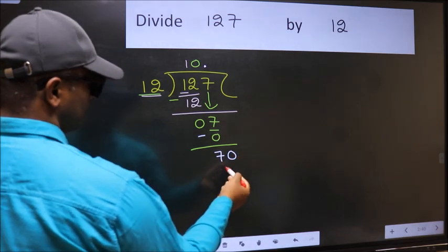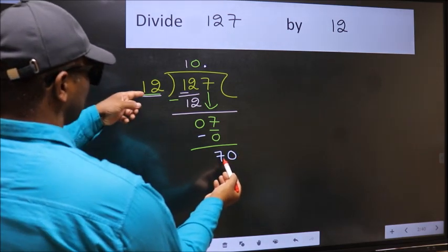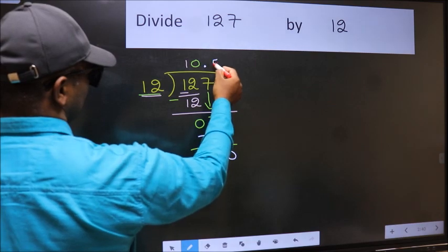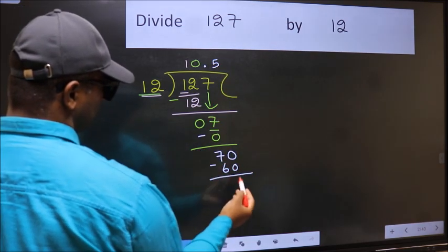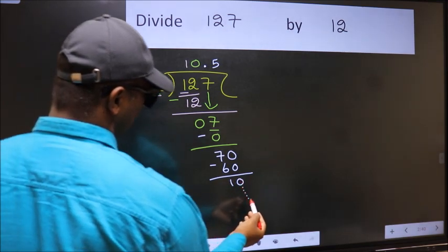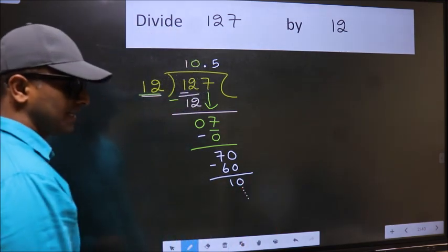So 70. A number close to 70 in 12 table is, 12, 5, 16. Now you should subtract. We get 10 and continue the division. I am not doing that.